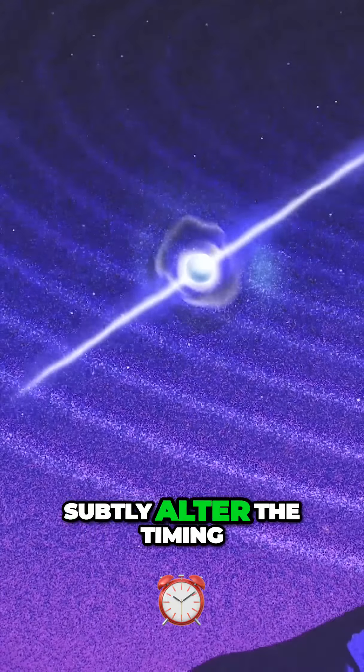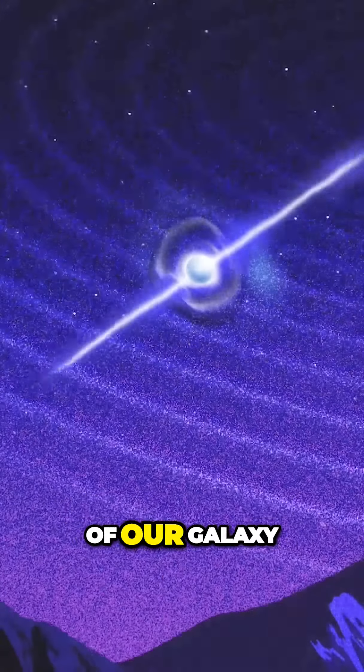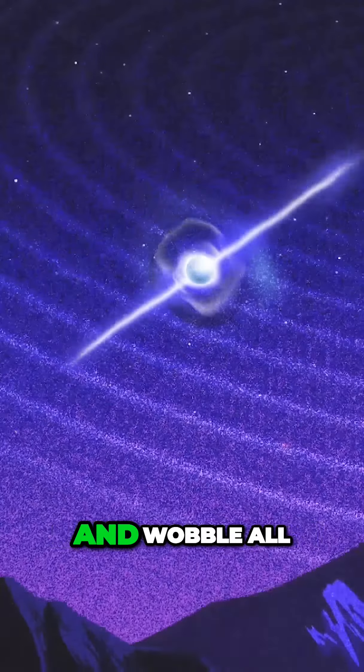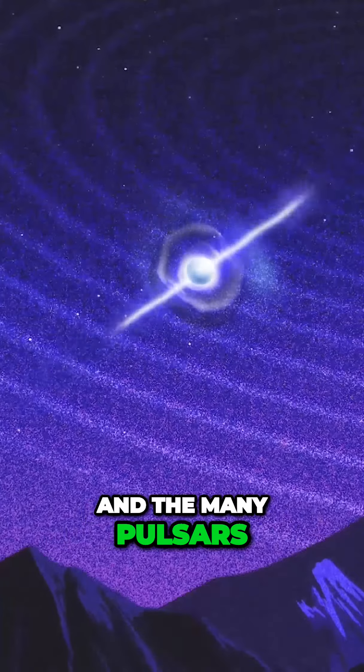Gravitational waves can subtly alter the timing of those pulses. A gravitational wave might come from outside of our galaxy. It will then jostle and wobble all of the space between the Earth and the many pulsars that we look at.